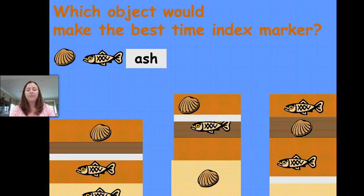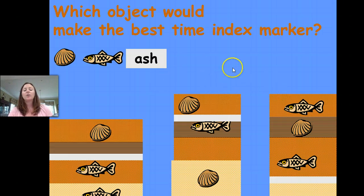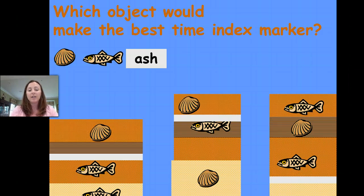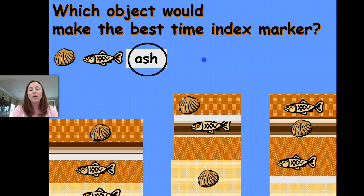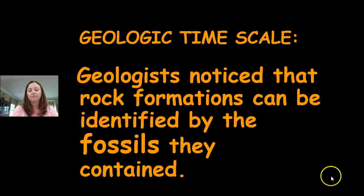Here's a picture of three rock strata, and we want to know which object would make the best time index marker — the clam, the fish, or the ash? We're looking for something that occurs only once in each of the three rock outcrops, indicating it was widespread but also existed for only a brief period of time. The white layer is the ash, and that would be the best index indicator — notice it's present here, here, and here.